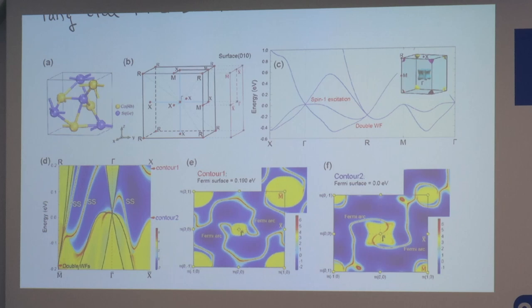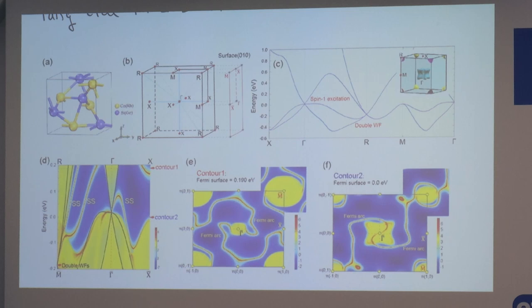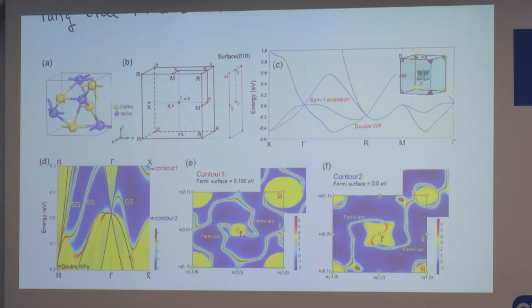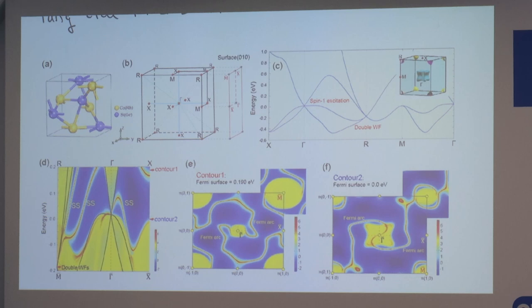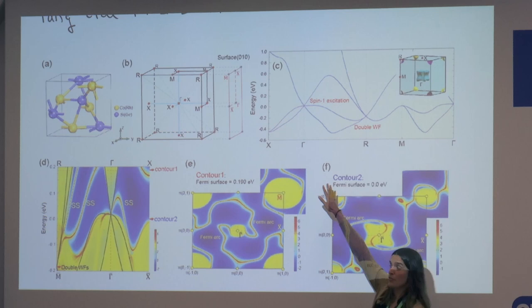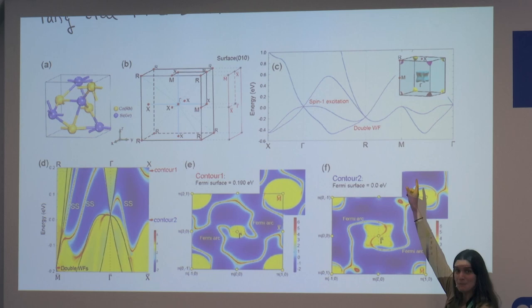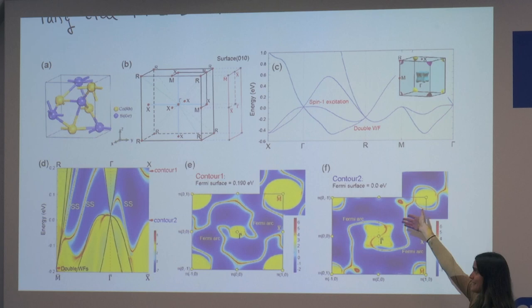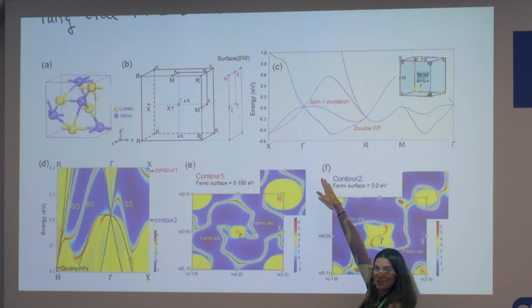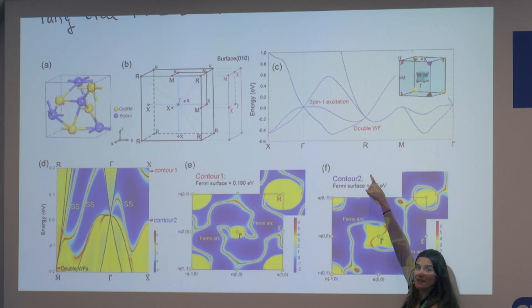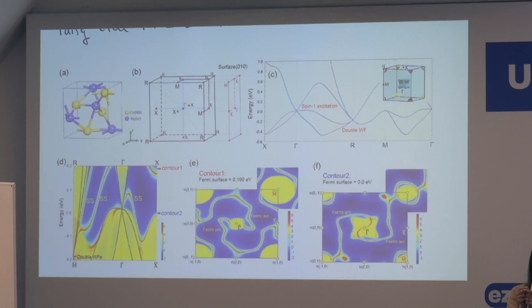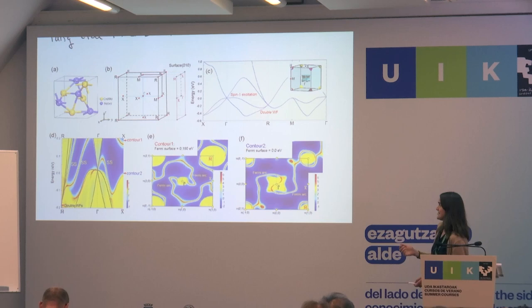The Fermi arcs coming from the threefold crossings, which do have a Chern number of two, are protected. Protected means that if I take a 2D slice, that slice is insulating and has a Chern number of two, so it has to have surface states. What happens in this model is that there's another band crossing in this plane, and whenever there's a bulk band crossing the bulk states will also contribute surface states. The protection really means if I look very close to the Weyl point I see two Fermi arcs that have to come out infinitesimally close — but if there's any other bulk crossing nearby, they can dissolve into that, which is different from detaching.